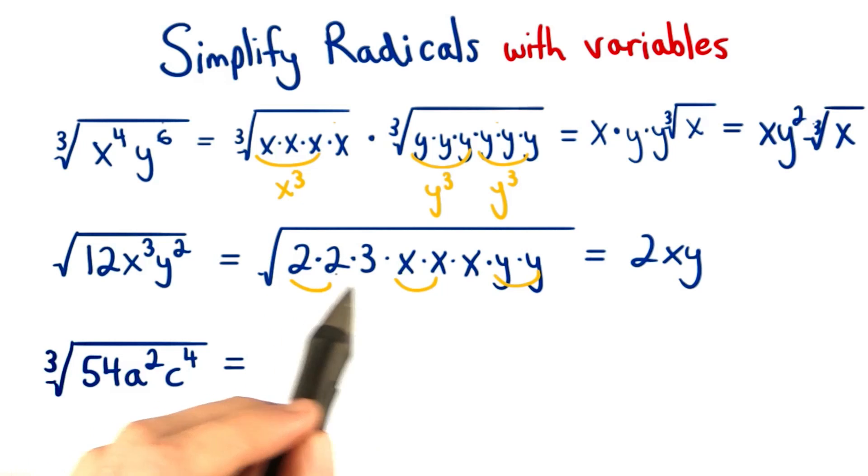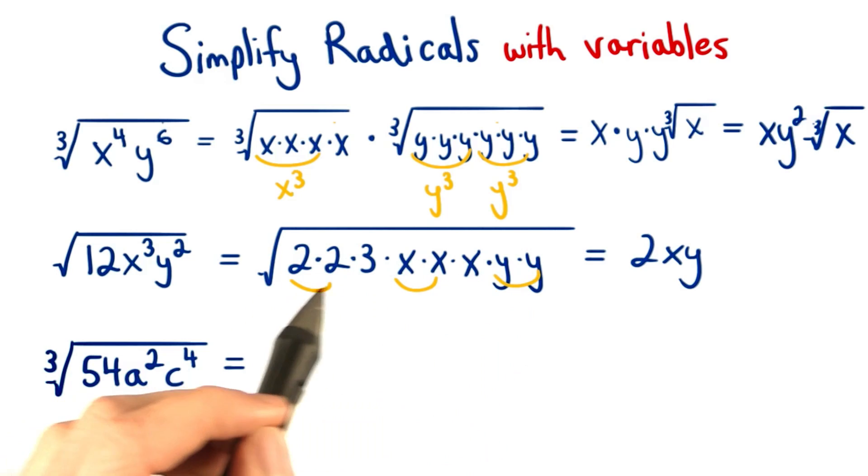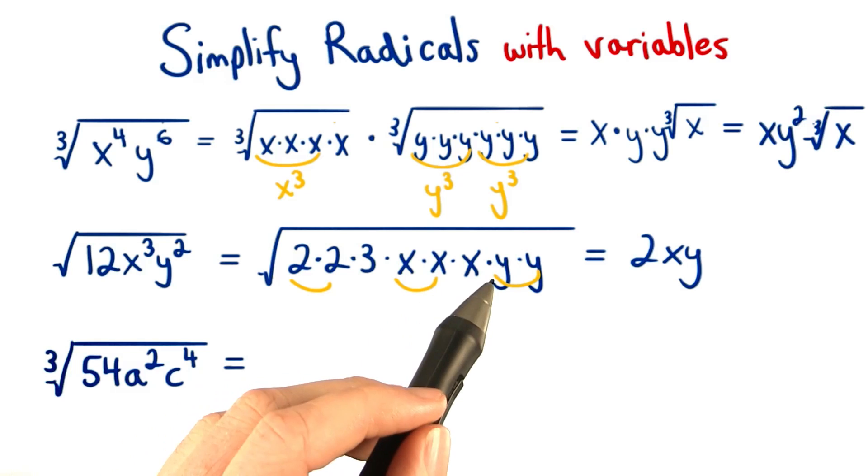We have two 2's, two x's, and two y's. So we can pull one 2 out, one x out, and one y out.